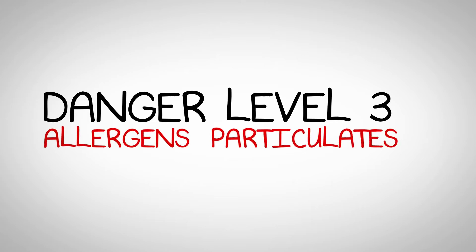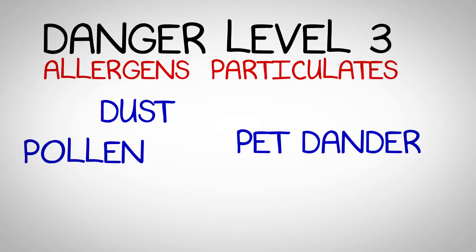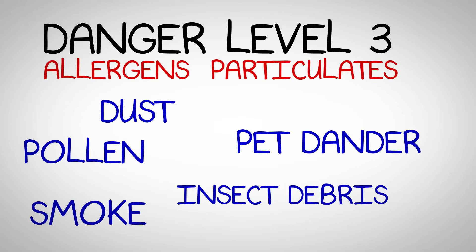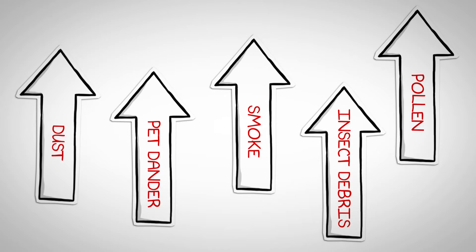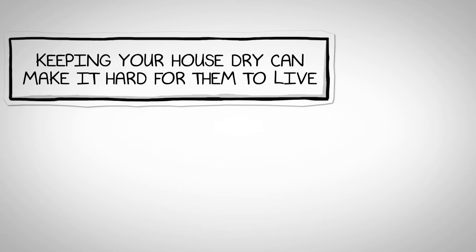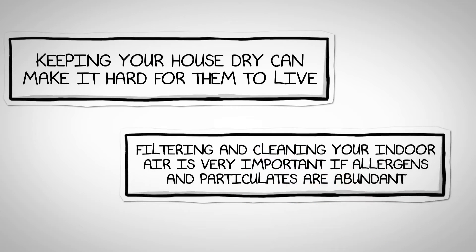Danger level three are allergens and particulates. Dust, pet dander, pollen, insect debris, and smoke are microscopic organisms that may live and float around naturally in your home. They typically travel through your air ducts and upward through the home following the stack effect. Dust mites were mentioned when we discussed moisture — keeping your house dry can make it hard for them to live. Filtering and cleaning your indoor air is very important if these allergens and particulates are present in abundance.